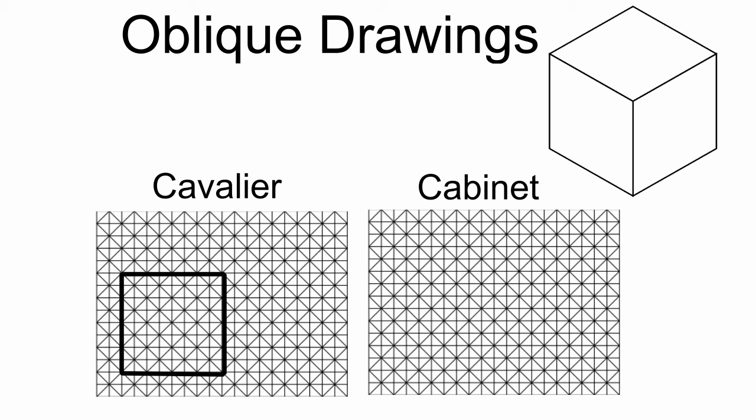Now the only thing we need to do is add on our depth because an oblique drawing gives us the 3D kind of feel. So now I'm going to take all of my outside corners minus the one that would cross over itself, and we're going to go back a full depth. This is a cube, so we're going to go back four grid spaces. In a cabinet, we'll go back half of that. We'll show you what the difference looks like in just a moment.